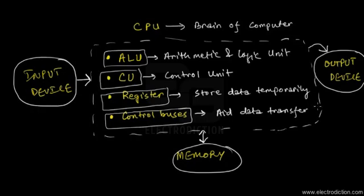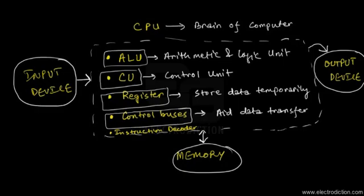All the units — the ALU, CU, registers, and control buses — are basically different circuits. The control buses are the wires that connect every part of the CPU. We also have instruction decoders inside the CPU, since the computer can be instructed to perform certain functions. The instruction decoder decodes the meaning — or control instructions — of each instruction.